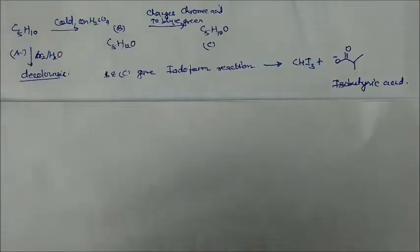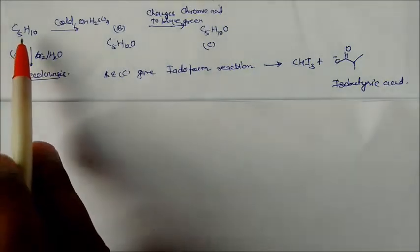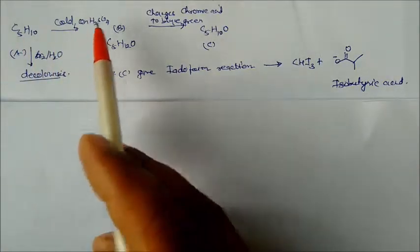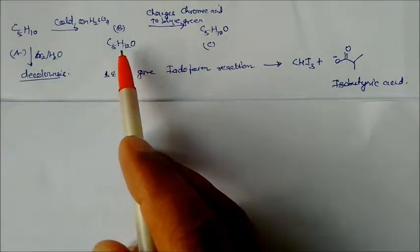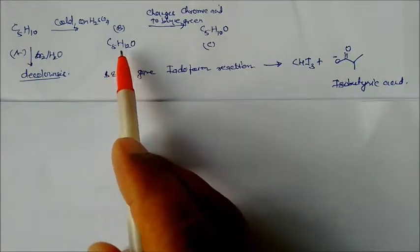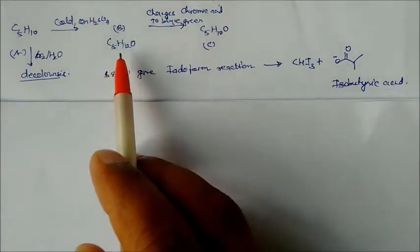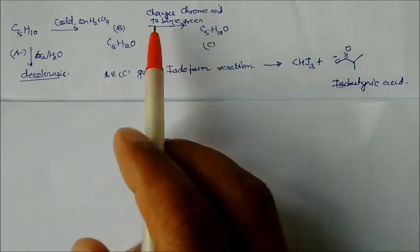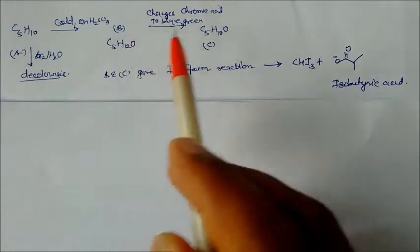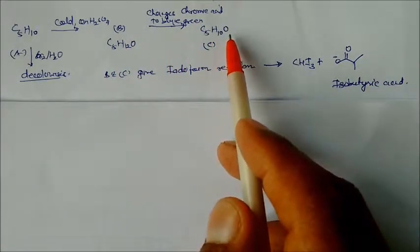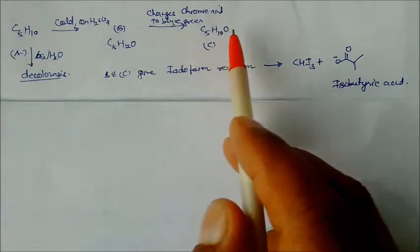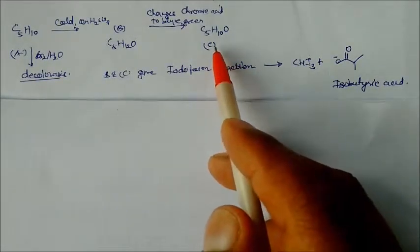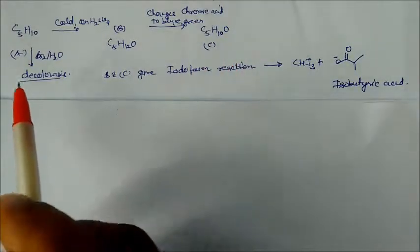This alkene compound C5H10 on cold concentrated H2SO4 converts to B, which is C5H12O — so B is an alcohol. B is then converted by chromic acid, turning it blue-green, meaning B is oxidized to C5H10O giving product C. We also note this is an alkene, so it can be easily decolorized by bromine water.